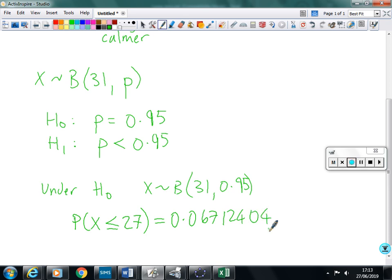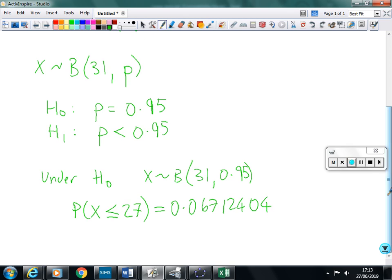So that probability is obviously greater than 0.05. So it's not in the most extreme 5% of results under that hypothesis. Therefore, there isn't evidence that the travel agent is wrong. So this large data set supports their claim.